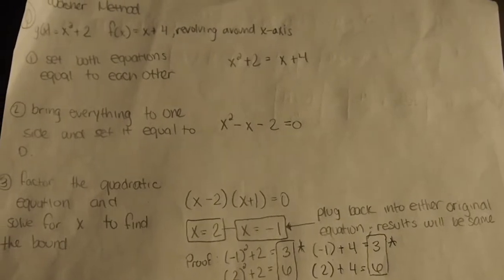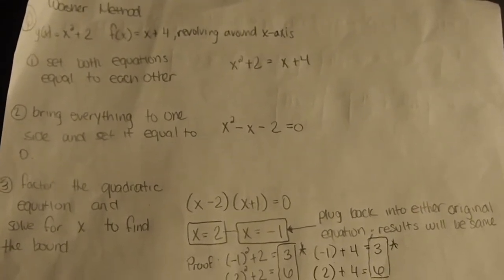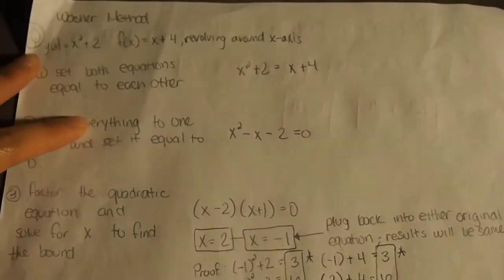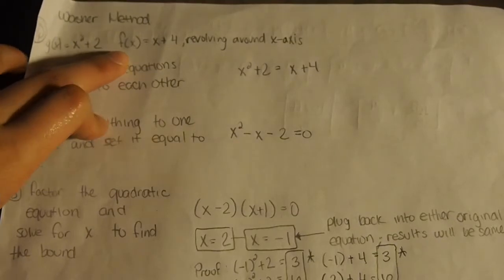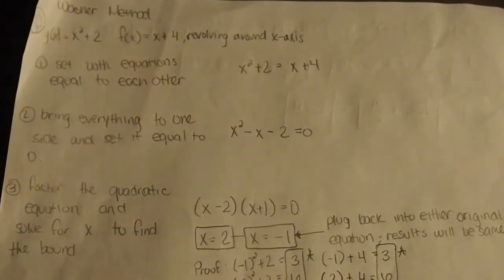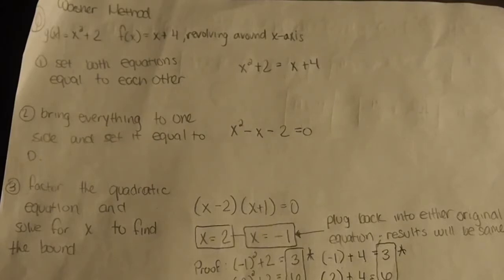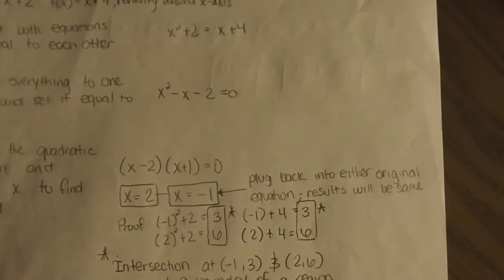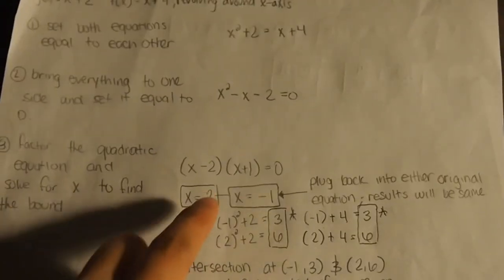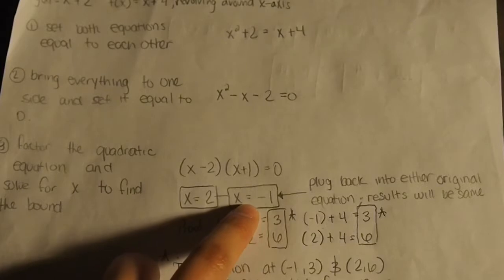This is an example of the washer method revolving around the x-axis. We're given the functions g(x) equals x squared plus 2 and f(x) equals x plus 4. Unlike many examples that typically provide the bounds, in this example we will be finding the bounds a and b. To find them, we find the points of intersection between g(x) and f(x) by setting the equations equal to each other, bringing everything to one side, and setting it equal to zero.